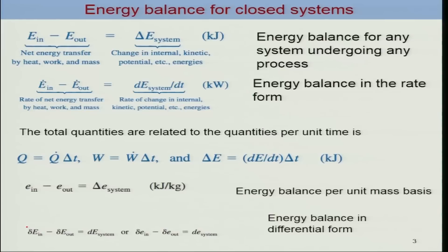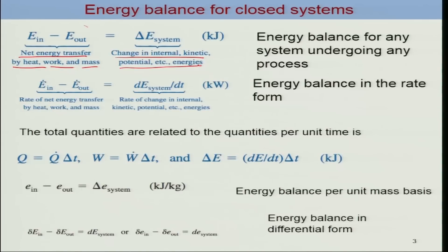Let us revise what we have learned as far as energy balance is concerned. This is a generalized form of energy balance where the net energy transfer by heat, work, and mass to the system should be equal to the change in internal energy, kinetic, potential, and other forms of energy. This is an energy balance for any system undergoing any process. You can also write this expression in rate form.